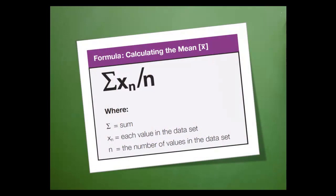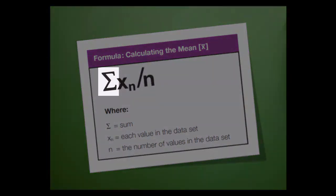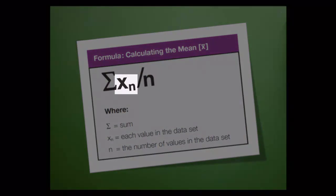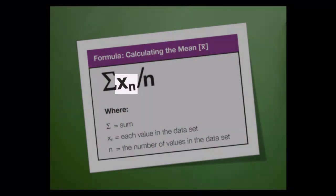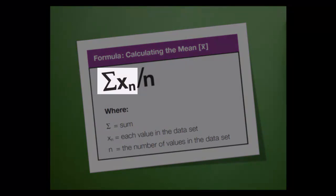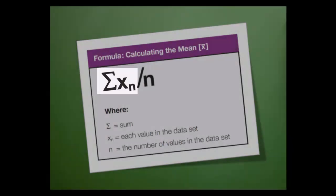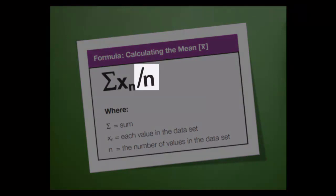This is the formula for calculating the mean. Let's pick it apart so that you can understand it. Sigma indicates a sum. X sub n represents each value in the data set. So this part of the formula requires us to add all of the values in the data set. Then we'll be dividing by the number of values in the data set.